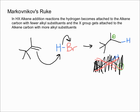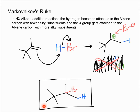Up here we have a tertiary carbocation, which is relatively stable and much more likely to form. We can cross out the primary carbocation. Next, the bromine comes in and attacks that carbocation, giving us the final major product.